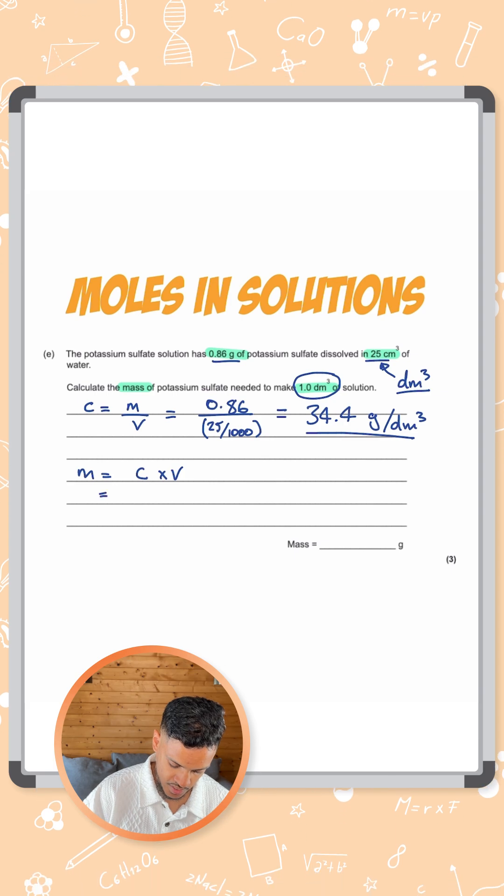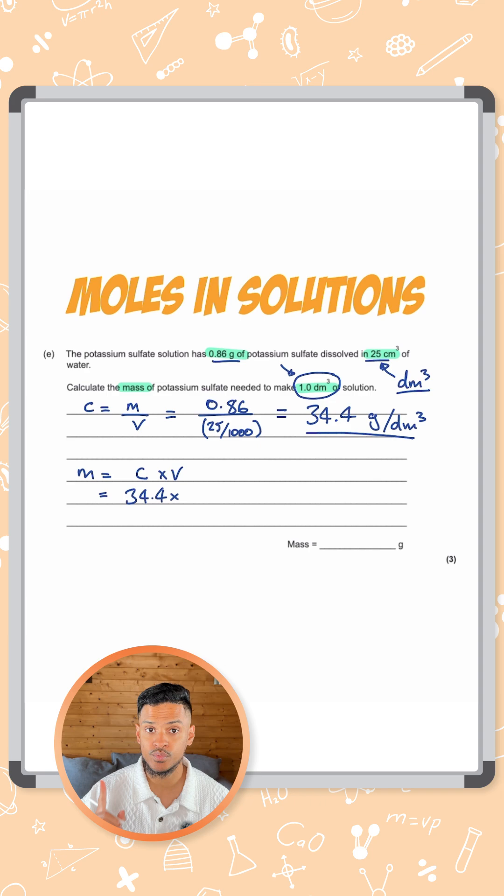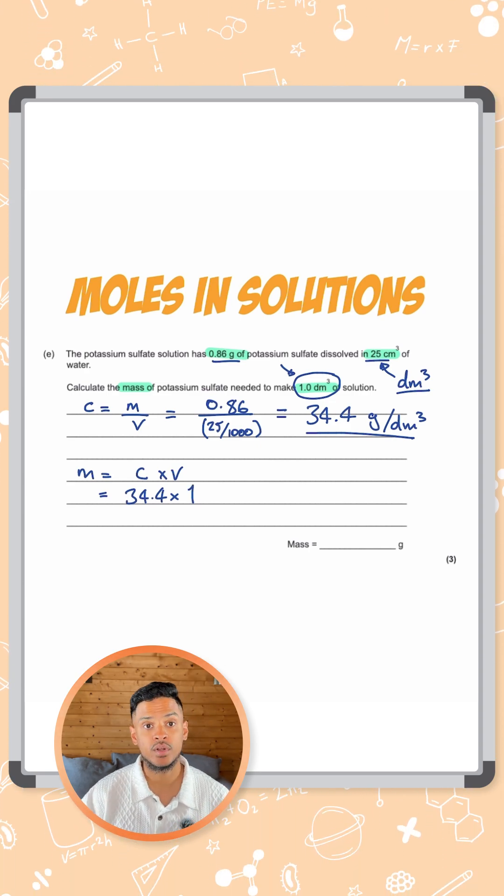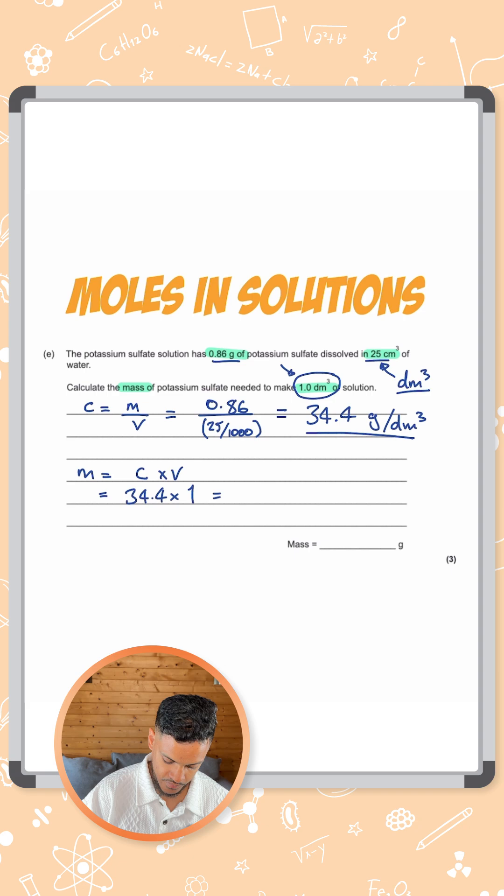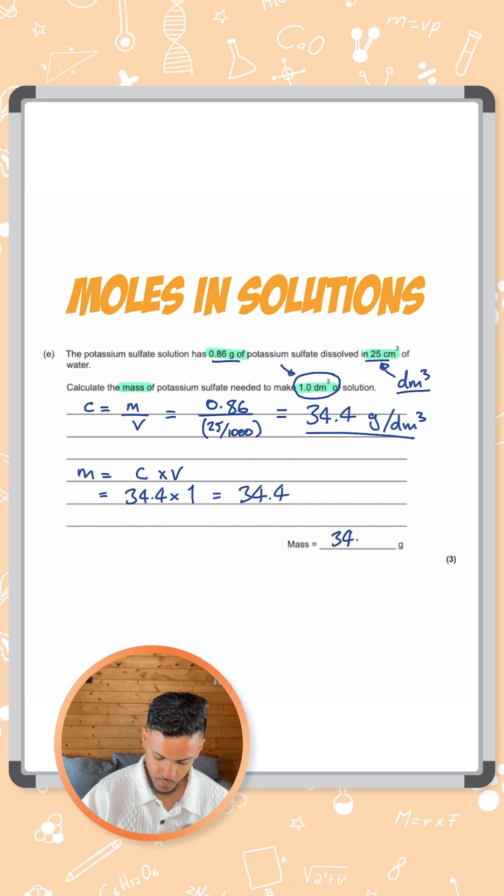Concentration we just worked out as 34.4. Let's multiply that by the volume that we were looking at, which was 1 dm cubed. We don't need to convert this because it's given as 1 dm cubed and you get an answer of 34.4 grams.